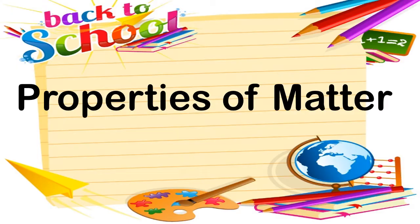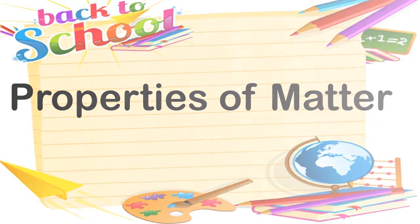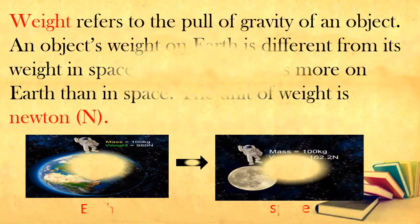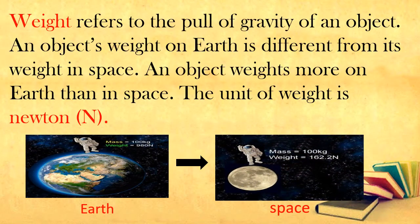Properties of matter: weight, mass, and volume are properties that are common to all matter. Weight refers to the pull of gravity on an object. An object's weight on Earth is different from its weight in space. An object weighs more on Earth than in space. The unit of weight is newton.